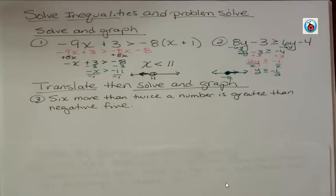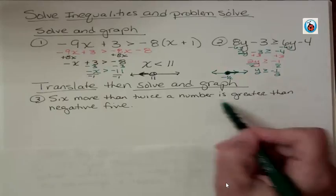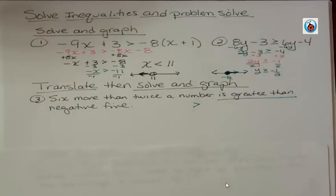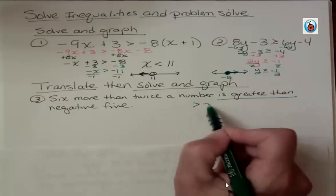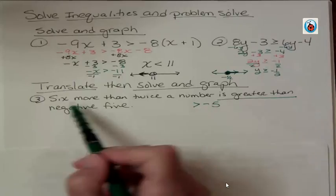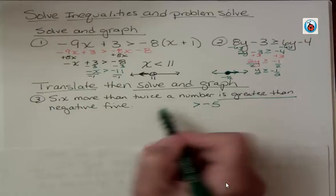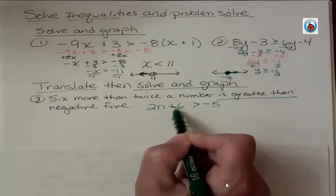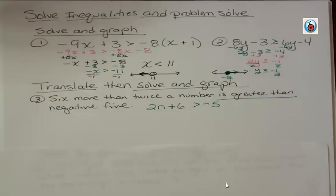Translate then solve. Six more than twice a number is greater than negative 5. Well is greater than is the symbol. And it's greater than negative 5. Six more than twice a number. You've got twice a number, 2n. Six more than that is plus 6. So 2n + 6 > -5.